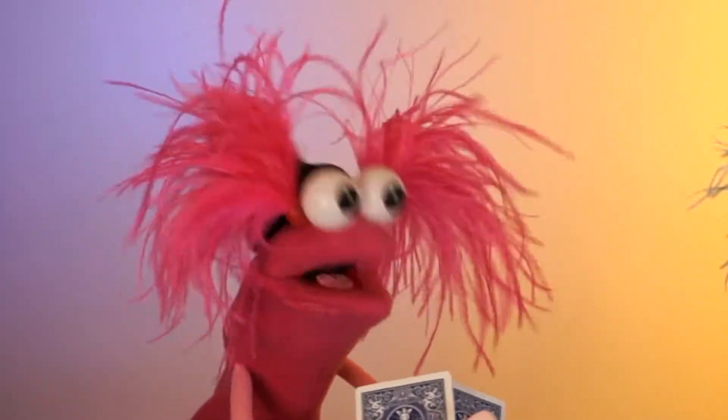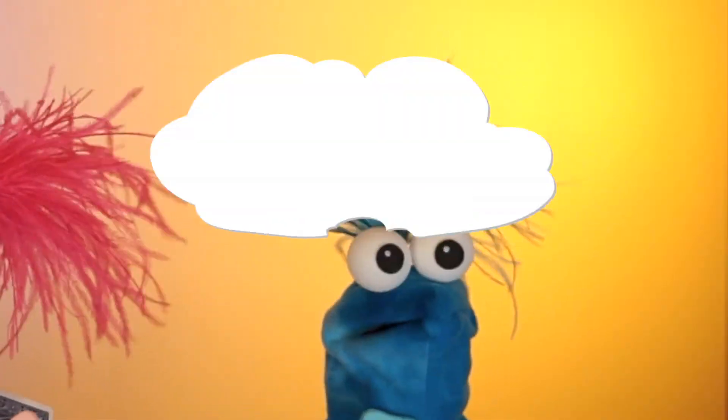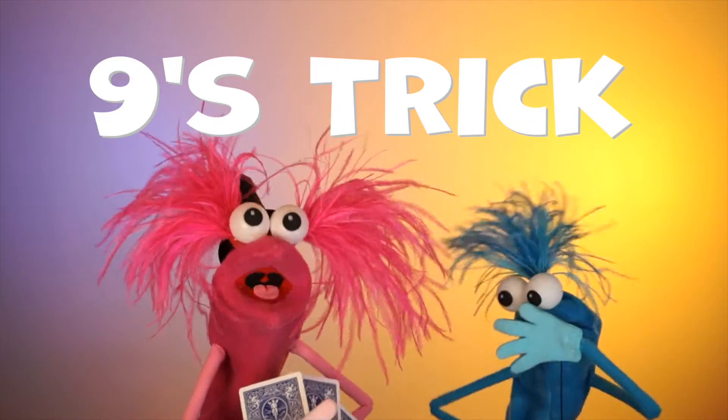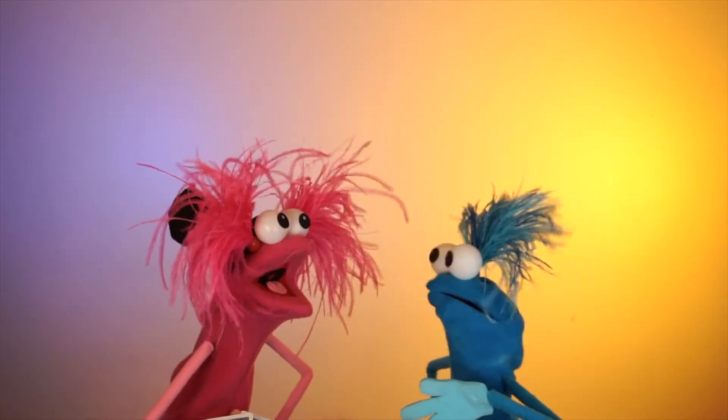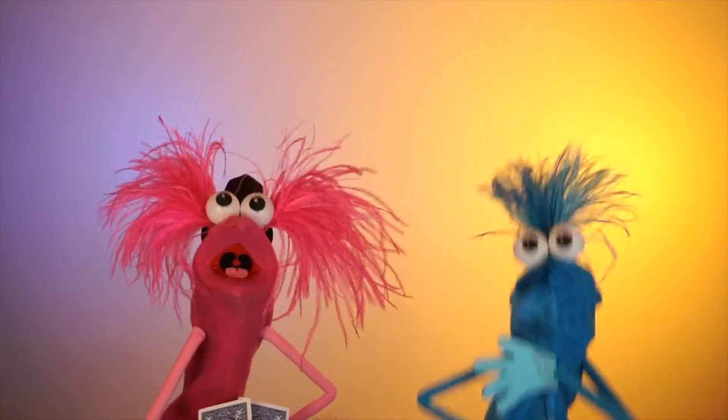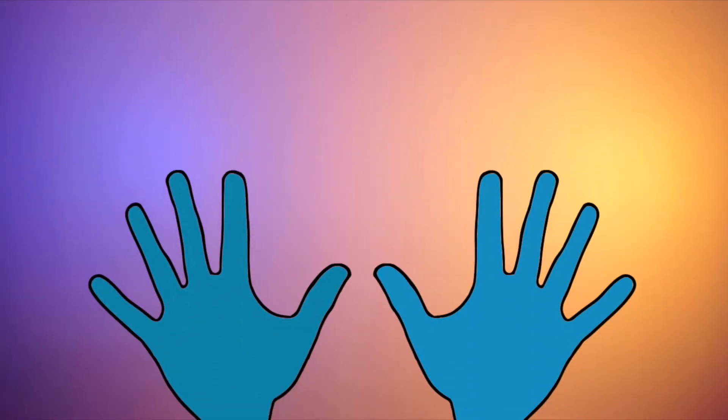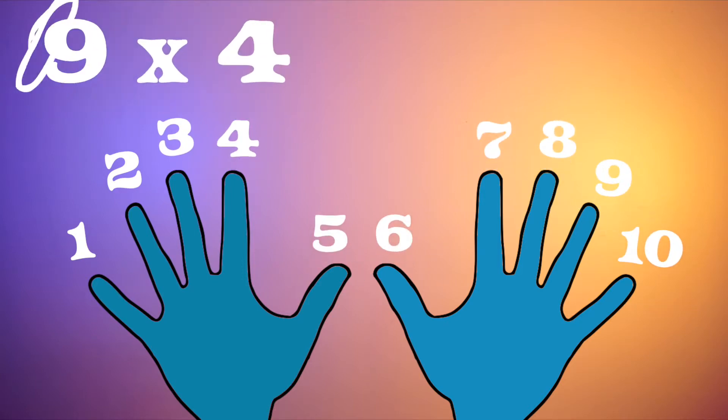Check this out. This one's for multiplication, so let's put our fingers in front of us and number them 1 through 10. Good. Now let's say we're doing 9 times 4. Find the fourth finger and bend it like this. Got it?